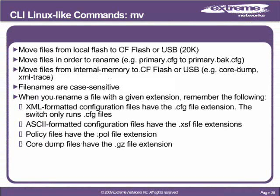The mv, or move, command is important when moving files from local flash to CF flash, or in the case of the Black Diamond 20K, to USB. You can move files in order to rename them, for example primary.cfg to primary.back.cfg. You can also move files from internal memory to CF flash or USB, which is useful for moving core dump files or XML trace files off the switch. File names are case sensitive — uppercase F and lowercase F are two different files.